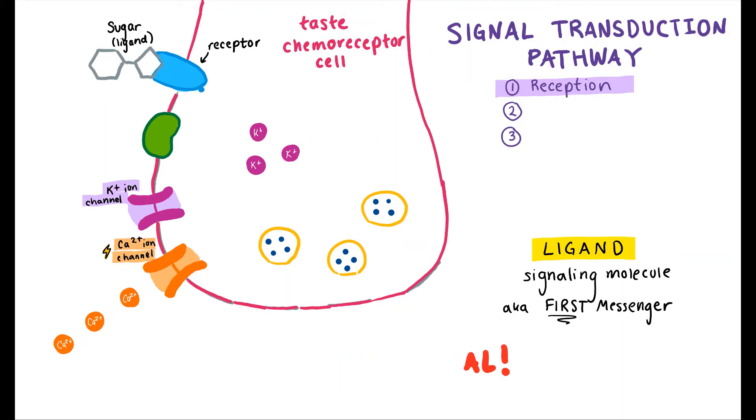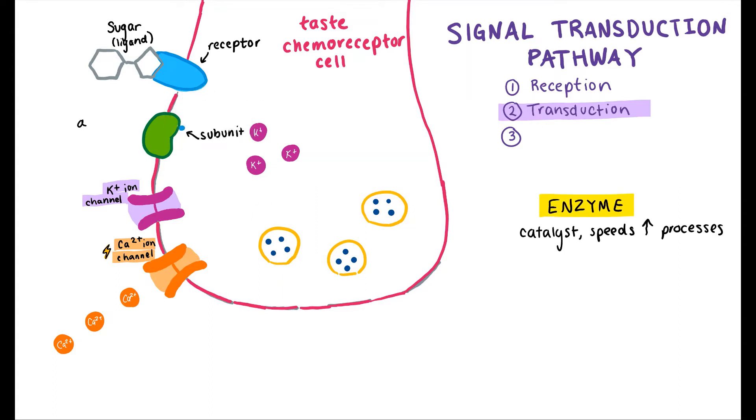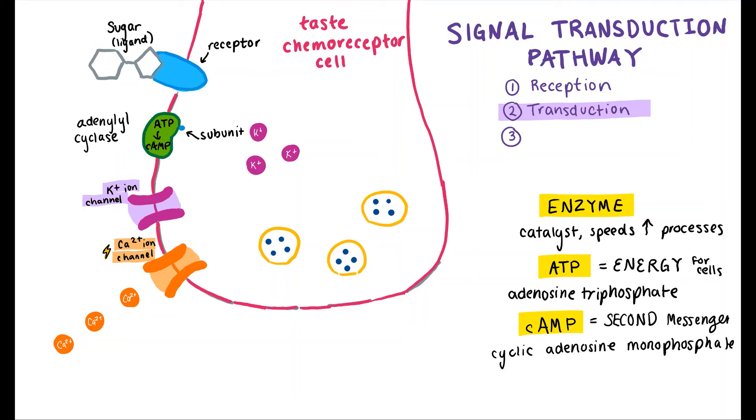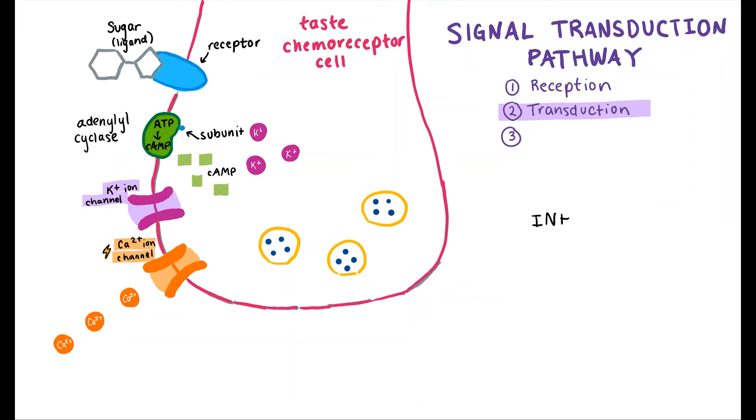Now, the lengthier transduction can occur. Immediately after the ligand binds, a small subunit releases from the receptor and makes its way over to an enzyme called adenylyl cyclase. Adenylyl cyclase will then convert ATP to cAMP. There are already potassium ions inside the cell, but because there is now a high concentration of cAMP, the potassium ions are inhibited, or blocked, from leaving the cell.